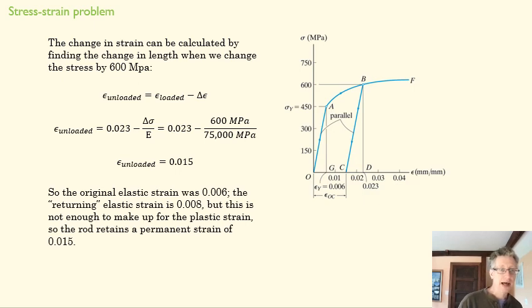So the original elastic strain was 0.6 to here, 0.006. The final elastic strain is a little bigger, right? Because you've actually gone higher. And so there's more time for it to move backwards as it moves through the diagram at this point. So the rod retains a permanent strain of 0.015.